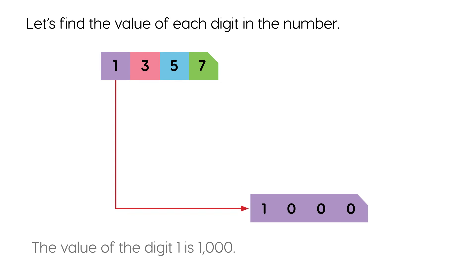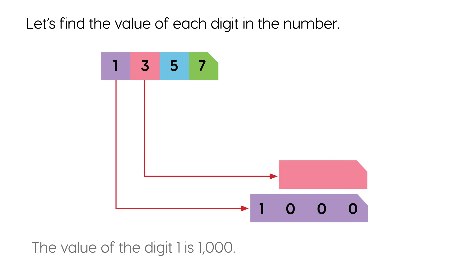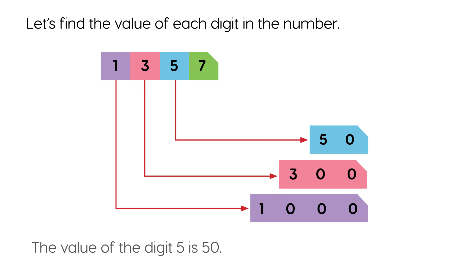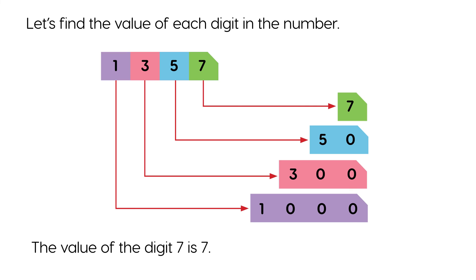The value of the digit 1 is 1000. The value of the digit 3 is 300. The value of the digit 5 is 50. The value of the digit 7 is 7. 1000 plus 300 plus 50 plus 7 equals 1357.